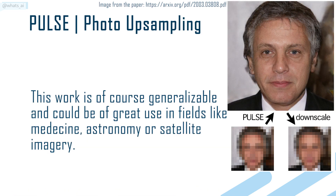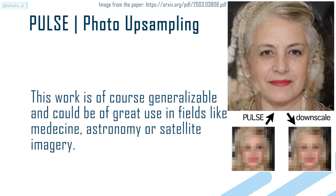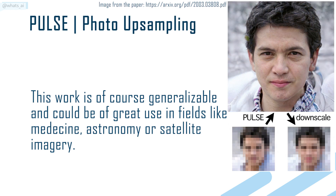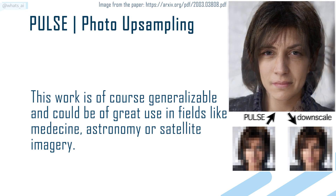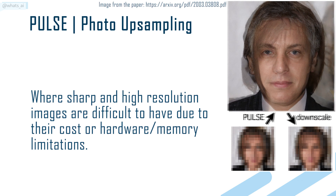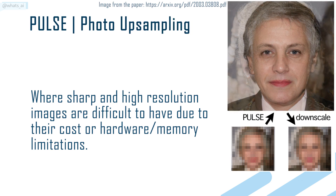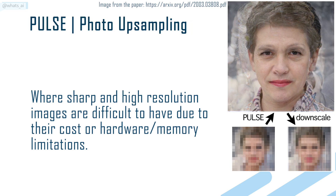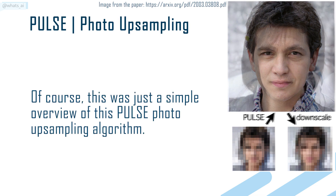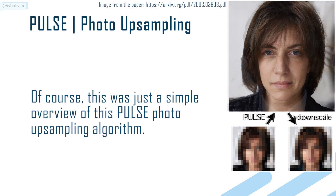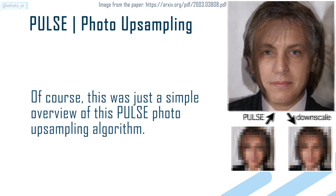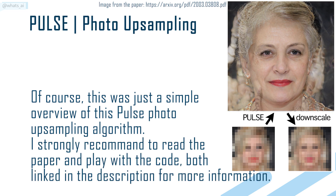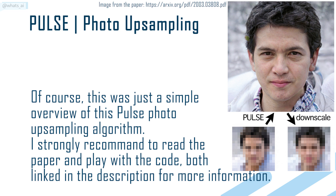This work is of course generalizable and could be of great use in fields like medicine, astronomy, or satellite imagery, where sharp and high-resolution images are difficult to obtain due to their cost or hardware and memory limitations. This was just a simple overview of the PULSE photo upsampling algorithm. I strongly recommend reading the paper and playing with the code — both are linked in the description for more information.